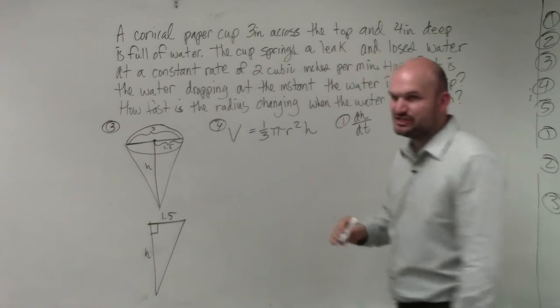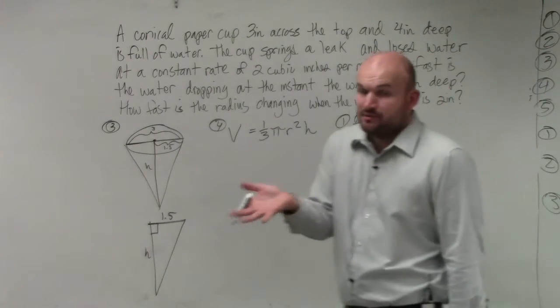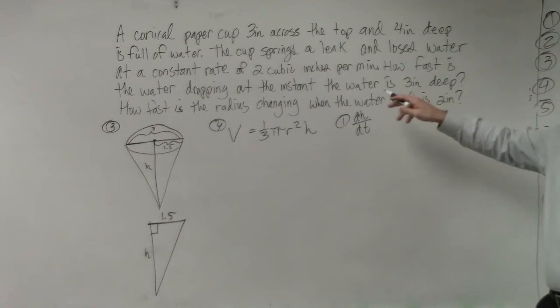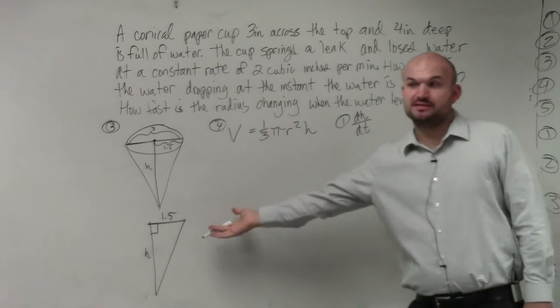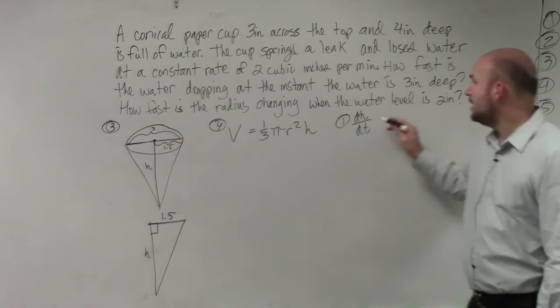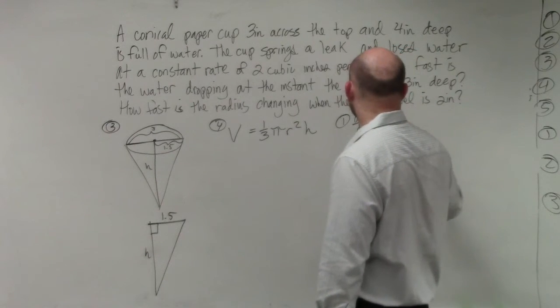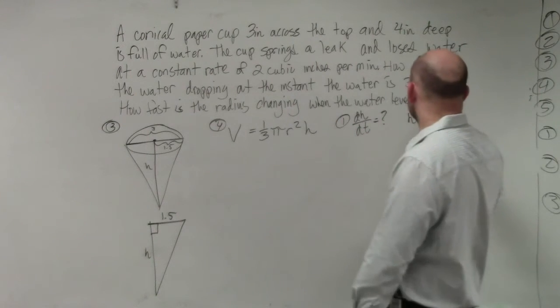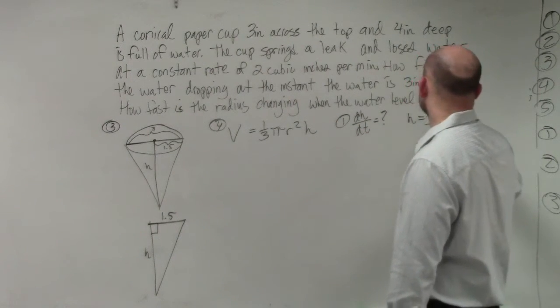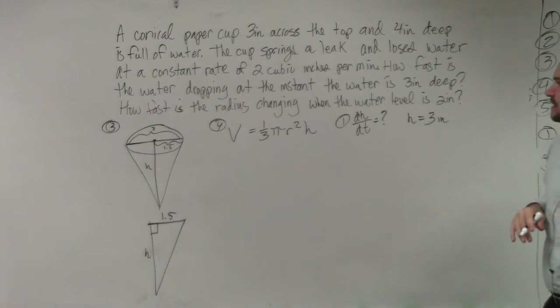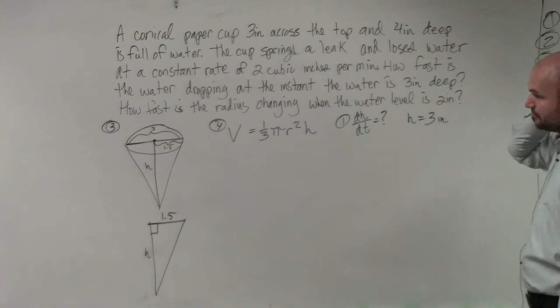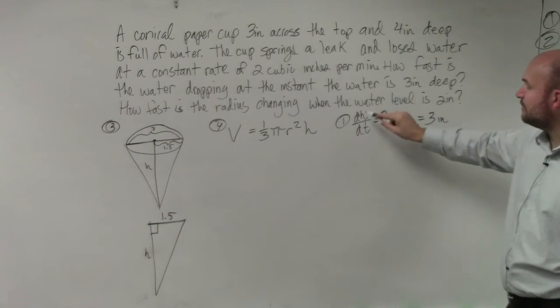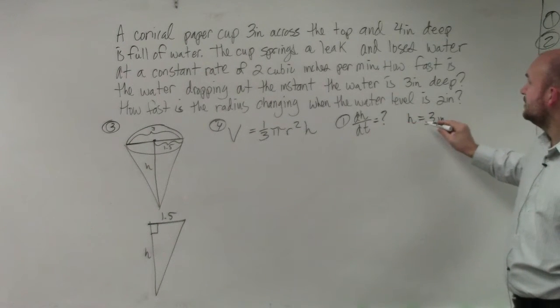So a couple of things that we know that we need to be able to figure out. We're going to be looking for dh/dt. That's going to be our final answer, is how is the height changing? Does that make sense from that question? How fast is the water dropping, which basically means how much is the height changing? And so that's what we're going to be solving for. We have our h. We know that we want to see how fast it's changing at a given time when h equals a certain value, which is going to be three inches.